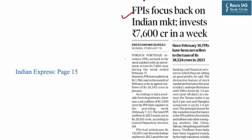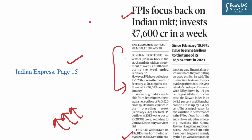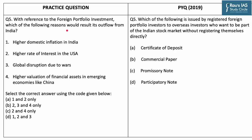The next MCQ is based on an article from page number 15 of Indian Express. As per the article, foreign portfolio investors — FPIs — are back in India's stock markets, having invested over ₹7,600 crore in the week ending February 17. What is important for UPSC are the trends — whether FPIs are flowing out of or into India. In 2022 there was a huge withdrawal of FDIs from India. The practice question asks: with reference to foreign portfolio investment, which reasons would result in its outflow from India?